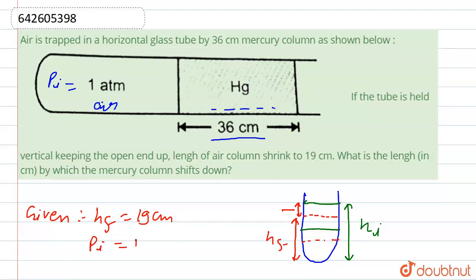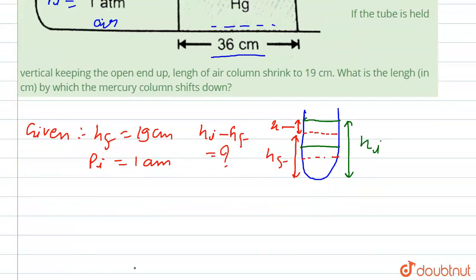P_i is equal to 1 atm. We have to find this distance. Let me call this distance h_i minus h_f, so we have to calculate h_i minus h_f.